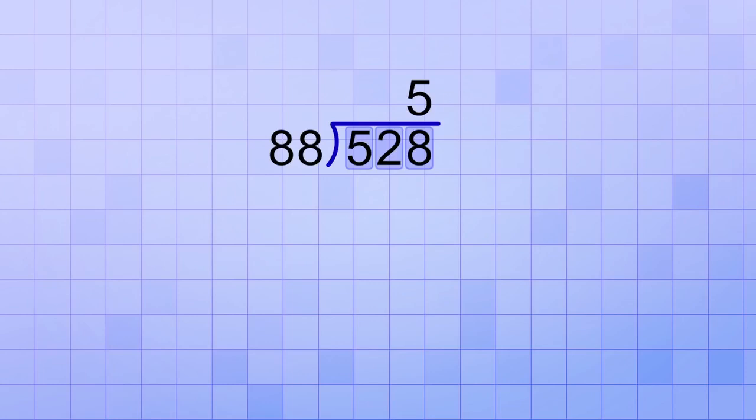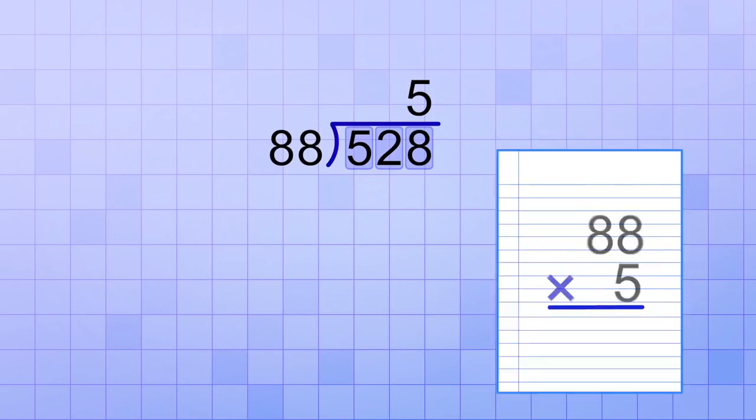To check to see how good that estimate is, we multiply 5 by 88, and then subtract that from 528 to see what the remainder is. Now, 5 times 88 is kind of tricky on its own, so you may want to use scratch paper to work it out. 5 times 88 is 440, and when we subtract 440 from 528, we get a remainder of 88.